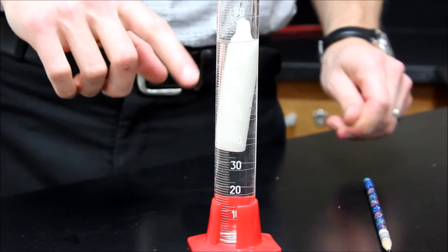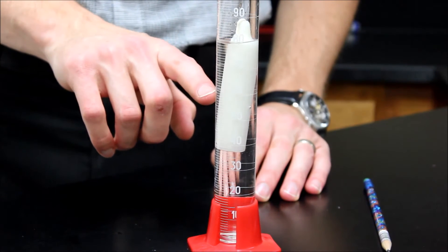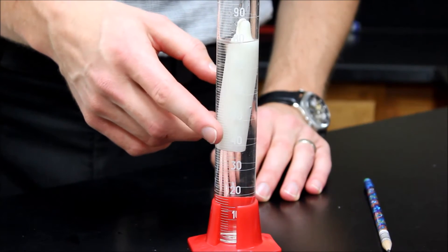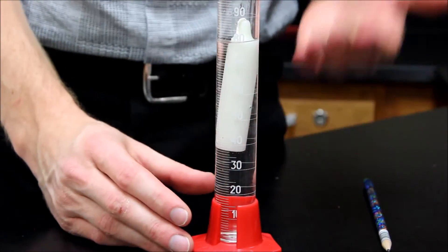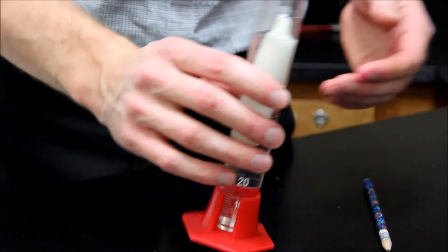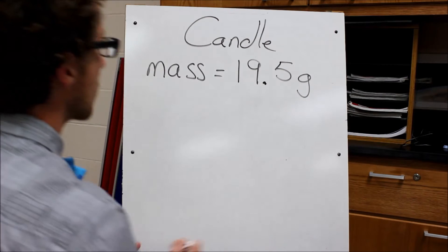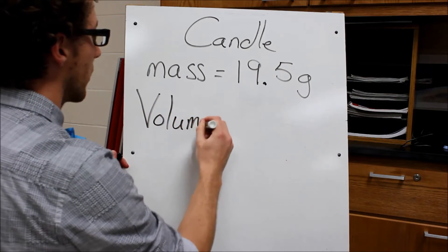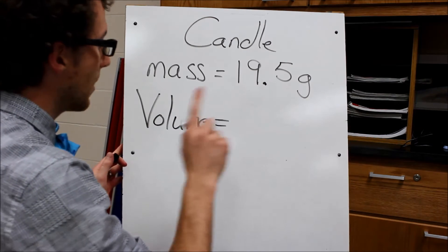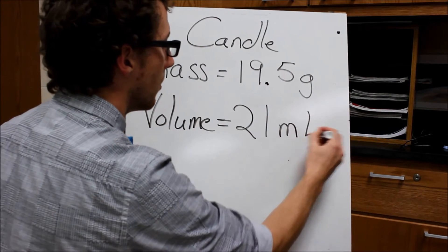Now my candle isn't 81 milliliters. I started at 60. So I have to subtract 60 milliliters from this amount and that gives me the volume of my candle. So the volume of my candle is about 21 milliliters. So let's go ahead and write that down as well.